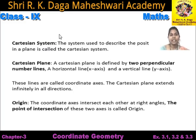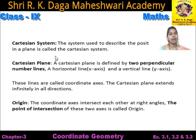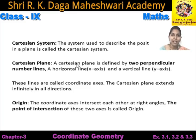Ab plane se kya meaning hai? Suppose maine ek rectangle liya. Is rectangle ke andar kahi bhi maine ek point P liya. Ab is point P ki us length se bhi kuch na kuch distance hogi, us rectangle ki width se bhi kuch na kuch distance hogi. Yaha pe sirf ek number line nahi hai. Toh yaha pe hame do number line ki zarurat pad rahi hai. Is liye hamne yaha pe ek plane consider kiya hai jo ki Cartesian plane kehrata hai.